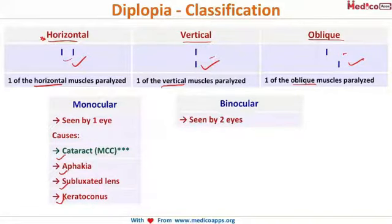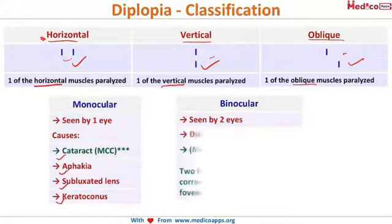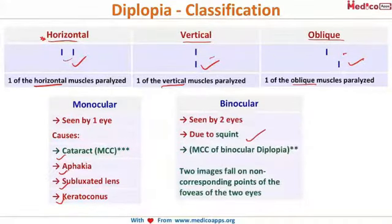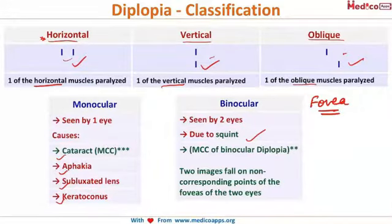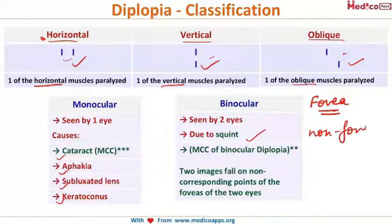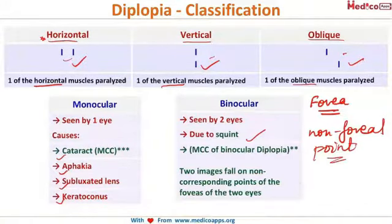Binocular diplopia occurs when the patient is using both eyes for vision. If he closes one eye, the diplopia disappears. It is most commonly due to squint, because for binocular vision both images need to fall on the fovea of each eye. If the image of the deviated eye falls on a non-foveal point rather than the fovea, that results in binocular diplopia.